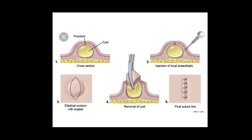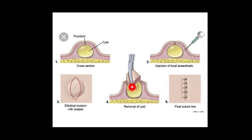In the excision technique, you give local anesthesia around the cyst, then place an elliptical incision including the punctum, and along with the overlying skin and punctum you excise the entire cyst by dissecting all around. Then you can close the wound with sutures.